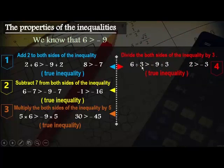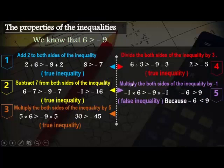Number 4: divide both sides by 3. 6 divided by 3 is greater than negative 9 divided by 3, giving 2 is greater than negative 3 — the inequality is true. But if we multiply both sides by negative 1: negative 1 times 6 greater than negative 9 times negative 1, then negative 6 is greater than 9 — and that is wrong, because negative 6 is smaller than 9. The inequality is false.